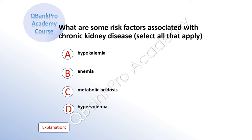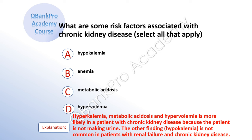What are some risk factors associated with chronic kidney disease? Select all that apply. A: hypokalemia. B: anemia. C: metabolic acidosis. D: hypervolemia. The correct answer is B: anemia. C: metabolic acidosis. And D: hypervolemia. Explanation: Hyperkalemia, metabolic acidosis, and hypervolemia are more likely in a patient with chronic kidney disease because the patient is not making urine. Hypokalemia is not common in patients with renal failure and chronic kidney disease.